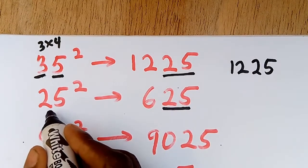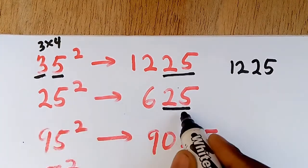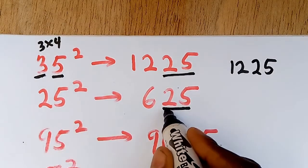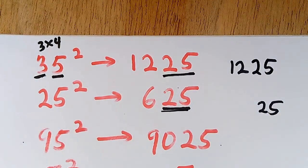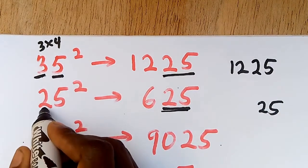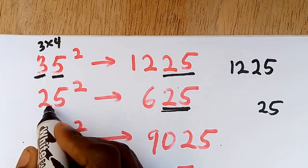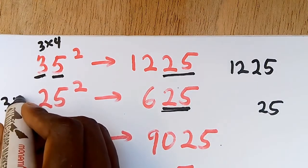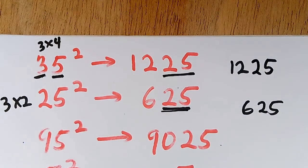For 25 squared, the last result is always going to be 25. Write your 25, then multiply the first digit 2 by the next number, which is 3. Two times three is 6. Write that in front: 625. That's the answer.